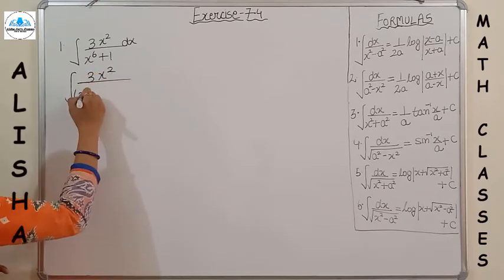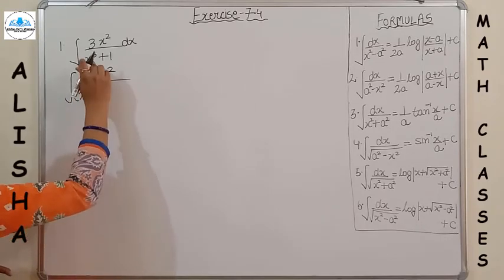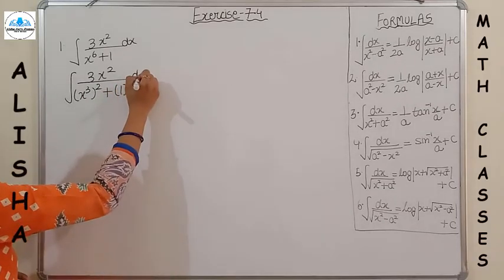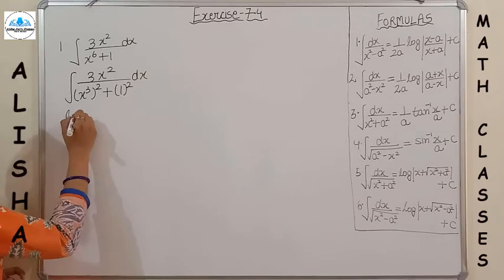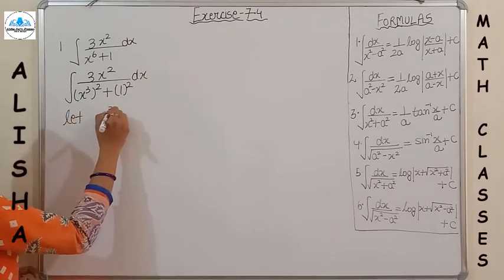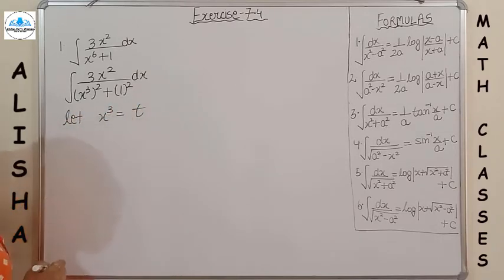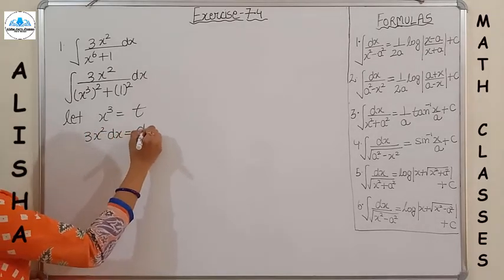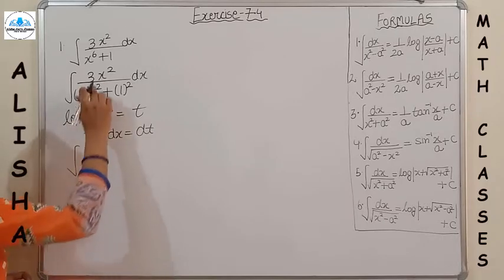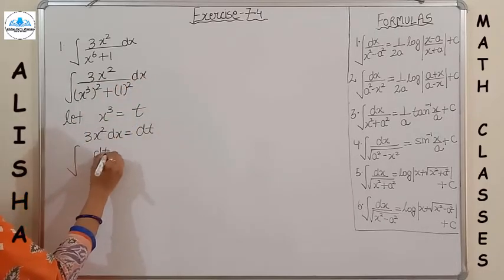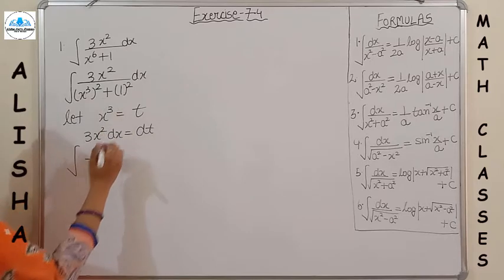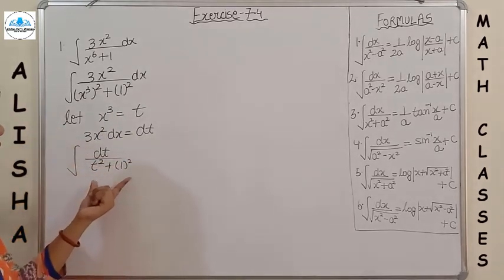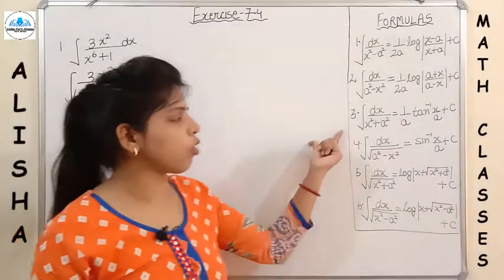We can write x⁶ + 1 as (x³)² + (1)². Now let us substitute x³ = t. Taking derivatives on both sides, 3x² dx = dt. Putting the values: 3x² dx = dt and x³ = t, so the integral becomes dt upon (t² + 1²). Now identify which formula applies to this form.